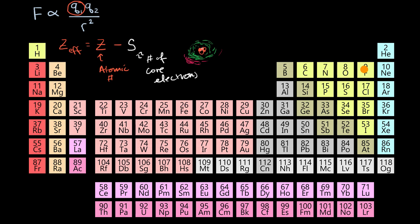What about the halogens? Fluorine has atomic number nine with two core electrons in the first shell, giving an effective charge of seven. Chlorine also has an effective charge of seven — atomic number 17 minus 10 core electrons. Going further right to the noble gases: helium has an effective charge of two (atomic number two minus zero core electrons), and neon has atomic number 10 minus only two core electrons. As you go down the noble gases other than helium, they have an effective charge of eight.